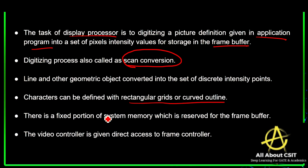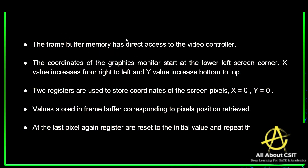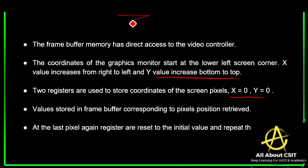Characters may be defined with rectangular grids or curved outlines. A fixed portion of system memory is reserved for the frame buffer, and the video controller is given direct access to the frame buffer. The coordinates of the graphic monitor start at the lower-left screen corner; the X value increases from left to right and Y increases from bottom to top. Two registers store the X and Y coordinates, initialized to zero. The value stored in the frame buffer corresponding to each pixel position is retrieved, and at the last pixel the registers reset to the initial value and the process repeats.